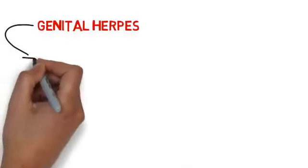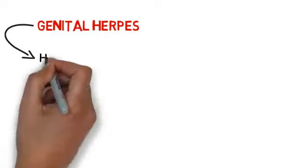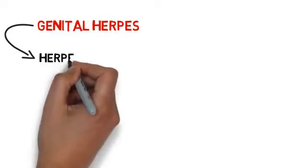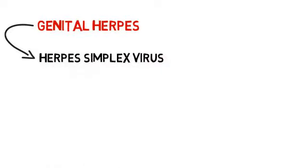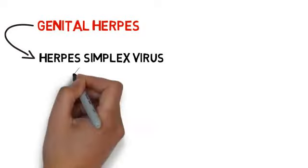Genital herpes is a genital infection caused by the herpes simplex virus. Unfortunately, only 10% to 20% of infected individuals know that they are infected. 70% of transmissions are from asymptomatic viral shedding from infected partners with no visible lesions.